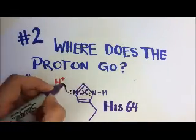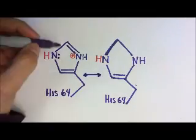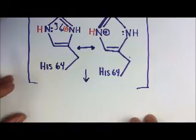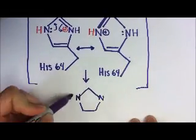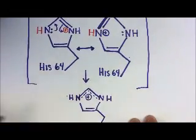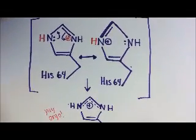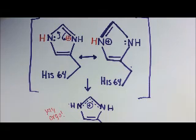His-64 catches the proton released from the zinc-bound water. The resulting positive charge in the residue is stabilized between the two nitrogens on its imidazole ring. His-64 then transfers the proton to the protein exterior, where it is eventually picked up by the surrounding buffer. This returns His-64 to its natural state, so it is ready to pick up another proton.